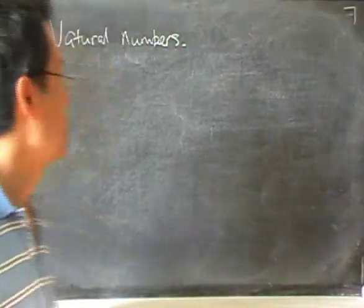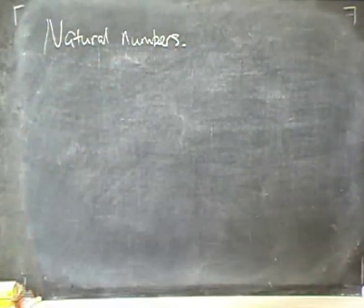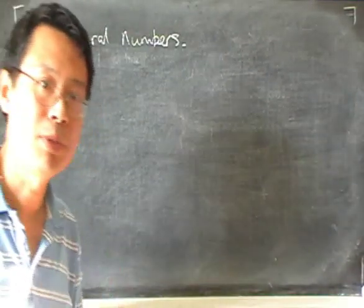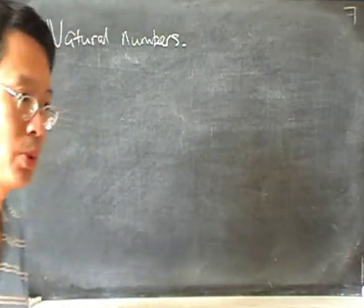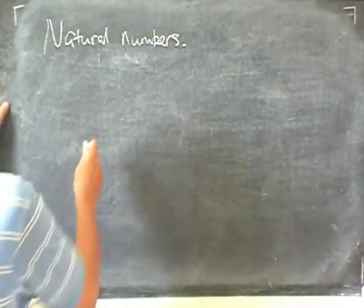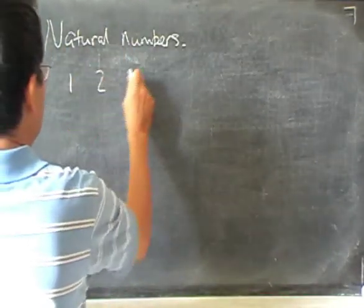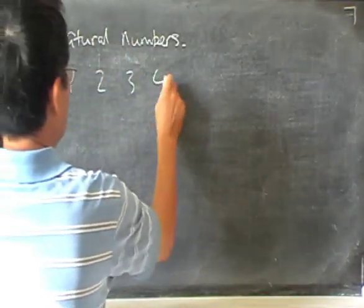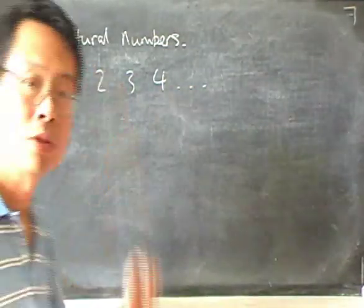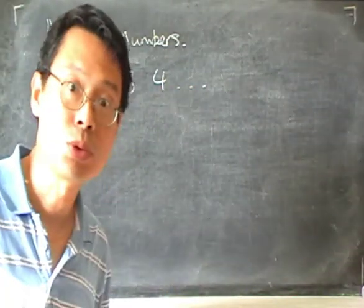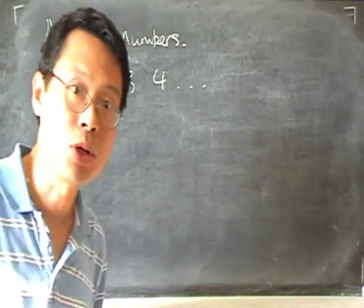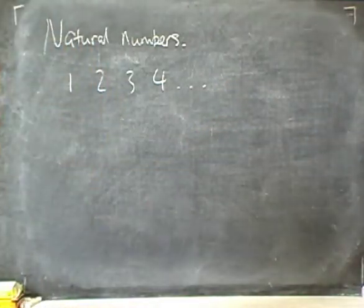I shall start with natural numbers. Natural numbers are the numbers that we are most familiar with. So, one, two, three, four, five, six, and so on. These are natural numbers.